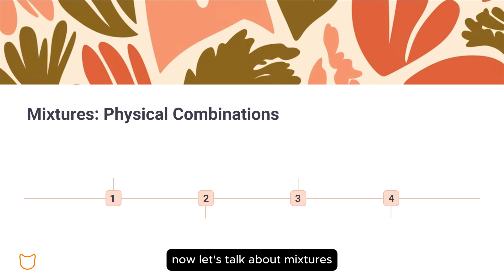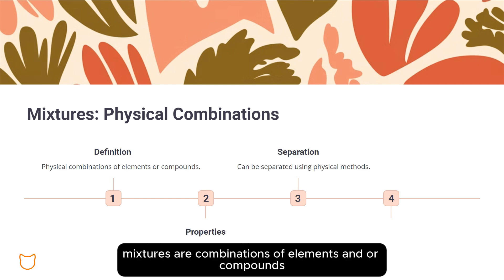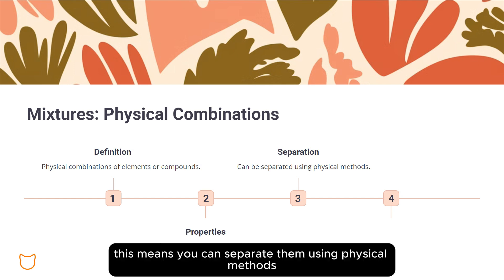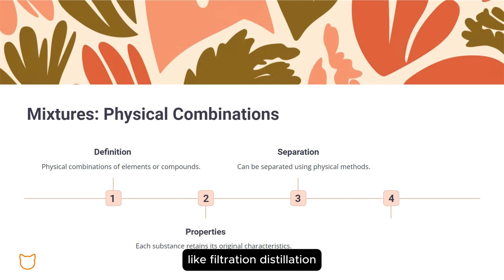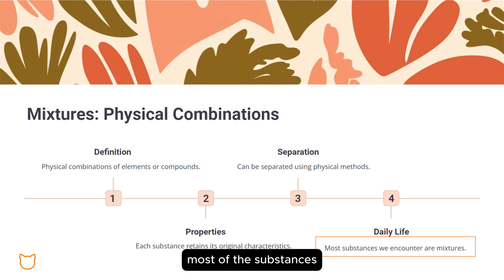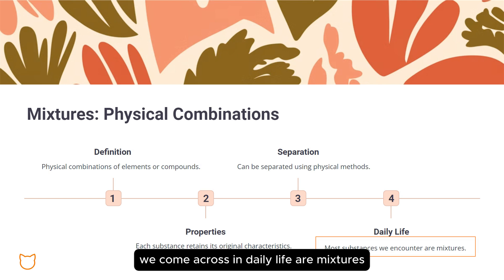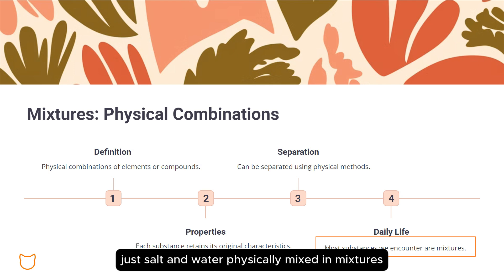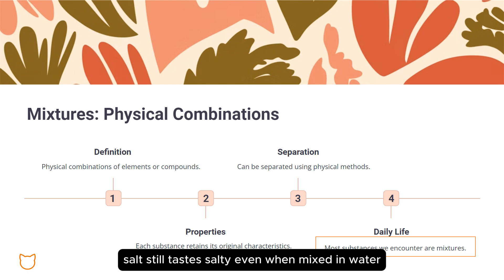Now let's talk about mixtures. Mixtures are combinations of elements and/or compounds that are not chemically bonded — they're just physically mixed. This means you can separate them using physical methods like filtration, distillation, or evaporation. Most of the substances we come across in daily life are mixtures. Air is a mixture of gases like nitrogen, oxygen, and carbon dioxide. Salt water is just salt and water physically mixed. In mixtures, each substance keeps its original properties — salt still tastes salty, even when mixed in water.